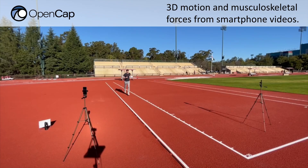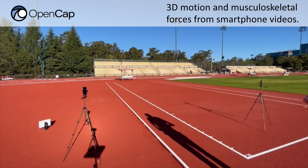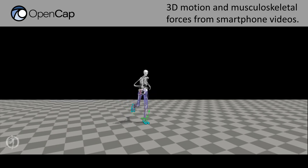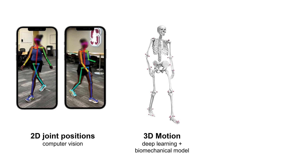Here we introduce OpenCap, an open-source, cloud-based software for measuring both human motion and the underlying musculoskeletal forces using two smartphones. OpenCap uses computer vision to identify joints from video and deep learning and biomechanical models to convert these points into accurate 3D motion.